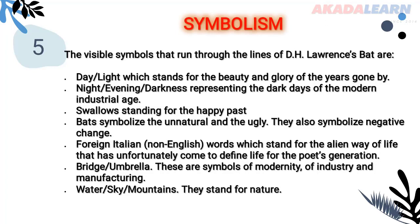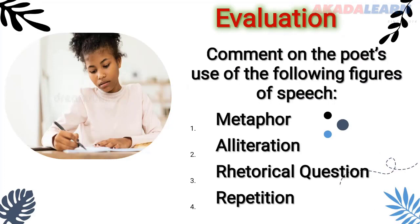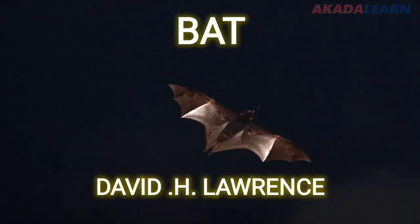We've come to the end of our class on the poem 'Bat' by D.H. Lawrence. We're moving to evaluation: comment on the poet's use of the following figures of speech — metaphor, alliteration, rhetorical question, and repetition. I need you to do this and see what you can deduce from the poem. I'll see you in our next class where we'll be analyzing the themes and the style. Until then, bye for now!